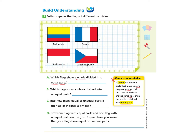Indonesia also looks like both pieces are equal. Let's look at the side to confirm — the white part is three squares and the red part is three squares. Now let's look at their length: both are nine squares long and they are the same length. So we can say that Indonesia is also a whole divided into equal parts.